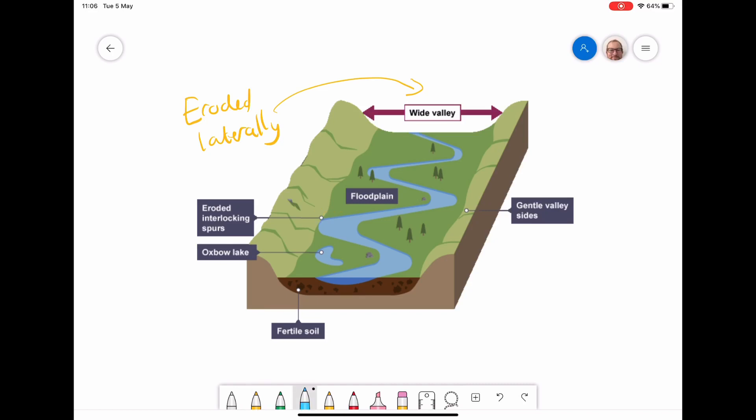The next stage is when, during periods of heavy rainfall, we get flooding in the river. As I'm drawing on here, the river bursts its banks and the water goes either side of the main channel. When the water is outside the channel, it loses its velocity.